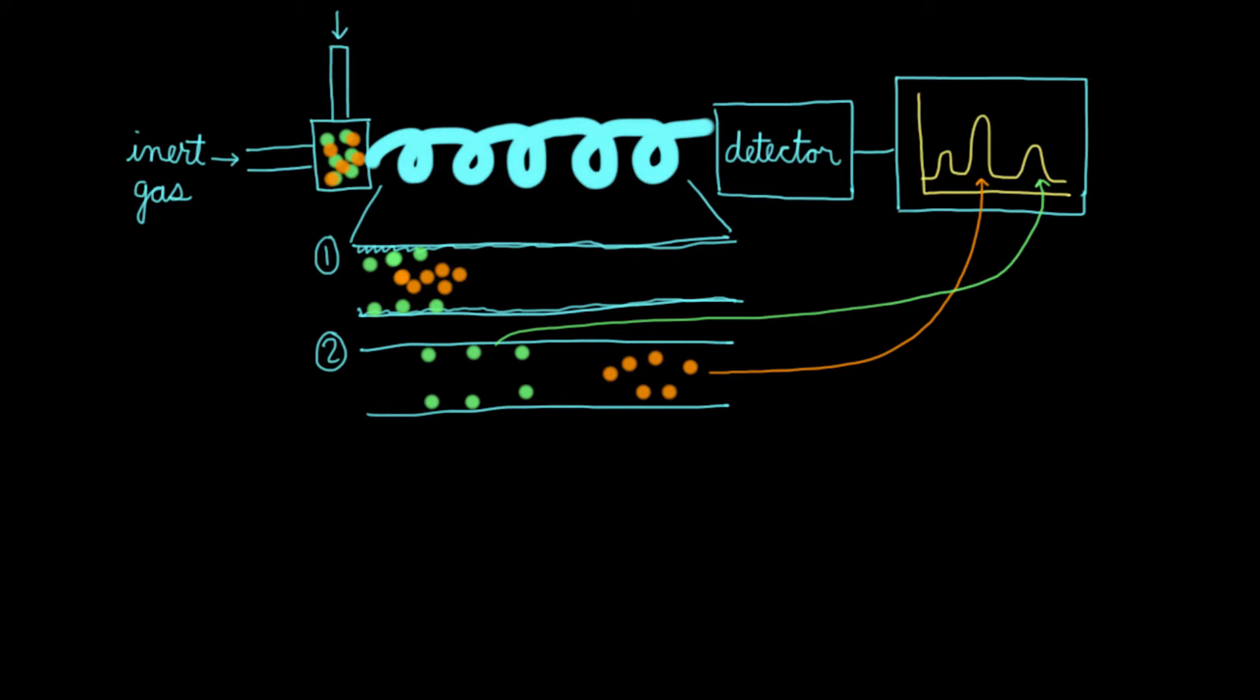But wait, there's actually a few other things. What if the green and orange compound had more similar boiling points? Could you still distinguish them? Actually, you could.